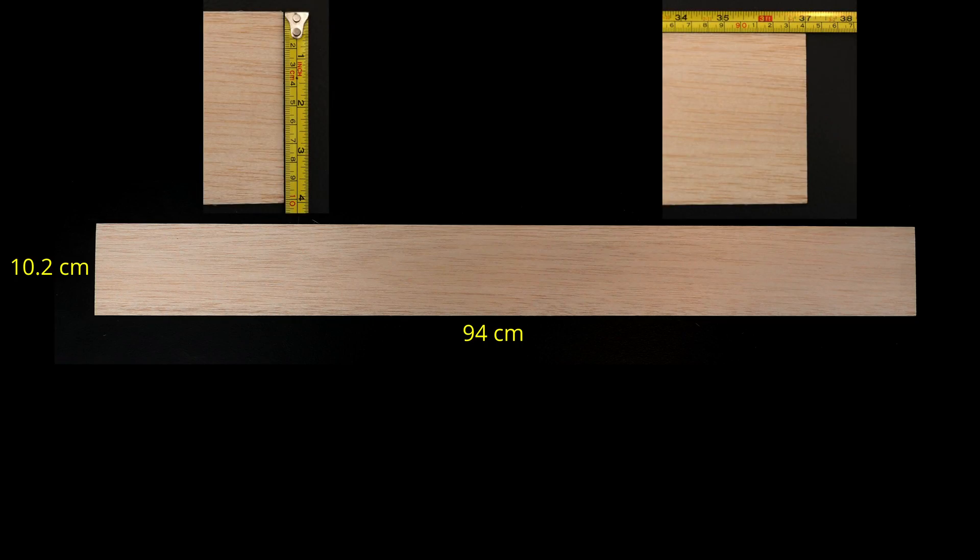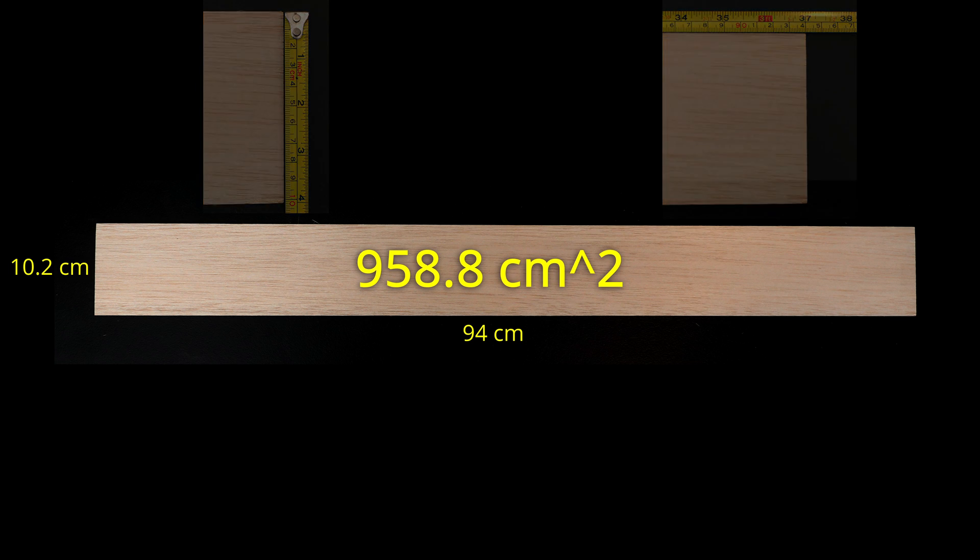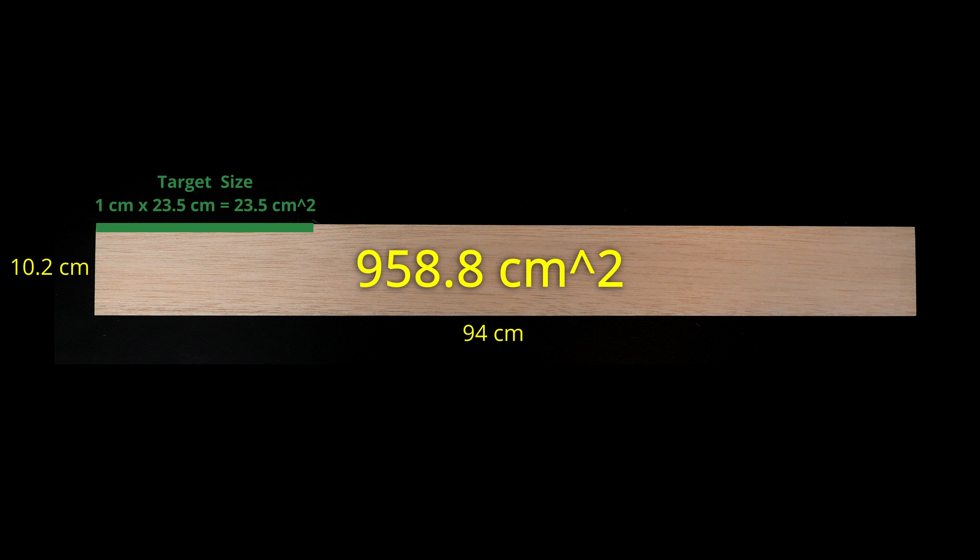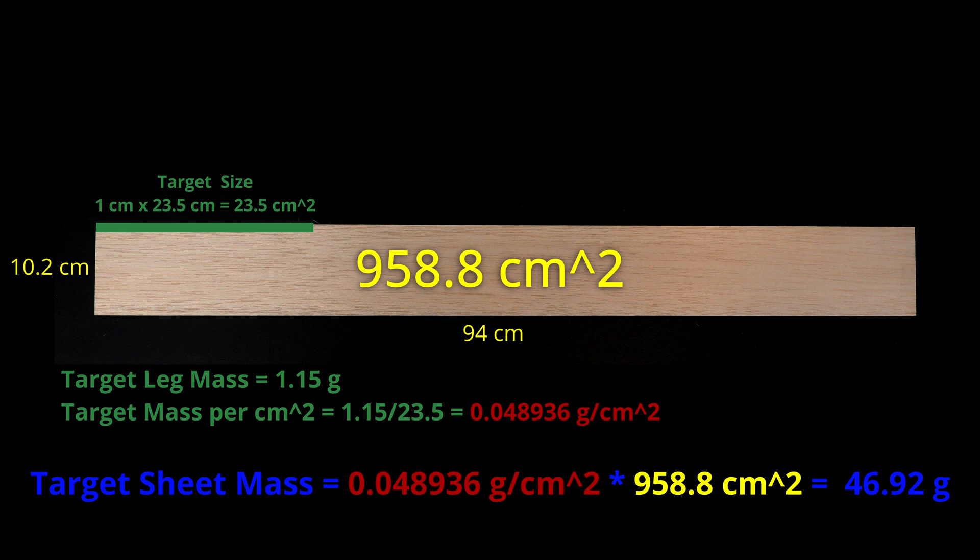The full sheet is 10.2 centimeters wide and 94 centimeters long for an area of 958.8 square centimeters. Our target size is 1 centimeter by 23.5 centimeters or just 23.5 square centimeters. Our target leg mass is 1.15 grams. So our target mass per square centimeter is 1.15 divided by 23.5 or 0.0489 grams per square centimeter. If we multiply that number by our entire sheet area, we get a target sheet mass of 46.92 grams.